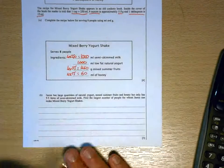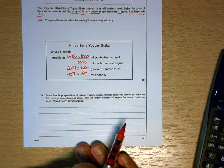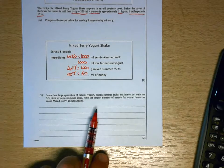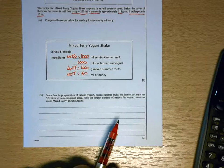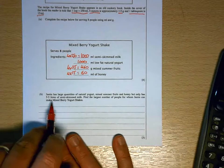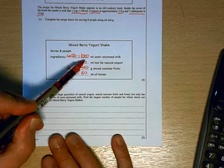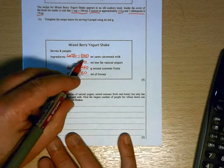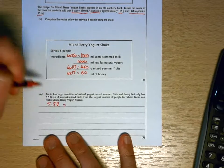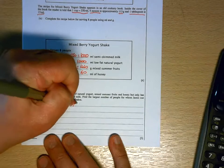And then finally, Jamie has large quantities of natural yogurt, mixed summer fruits, and honey, but only has five and a half liters of semi-skimmed milk. Find the largest number of people for whom Jamie can make mixed berry yogurt shakes. So the milk required is in thousand liter blocks, so sorry, milliliter blocks. So 5.5 liters, if we change that into milliliters, then you'll see that that is five thousand five hundred milliliters.